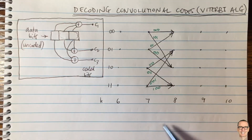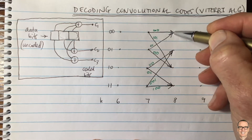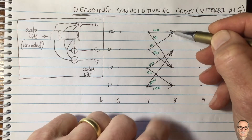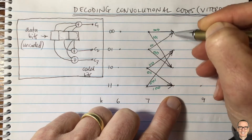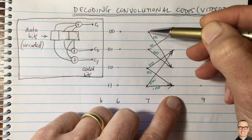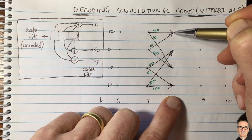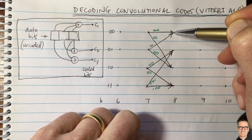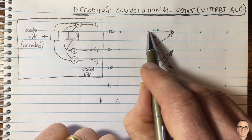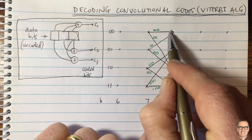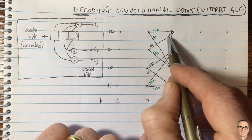This is where the Viterbi algorithm comes in. At each time slot, it goes to each of the different states. For each state, it makes a decision about which of the two incoming paths it thinks was most likely, and it keeps the winner and discards the other.